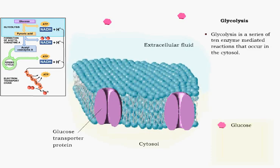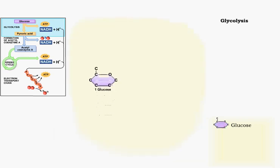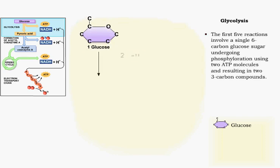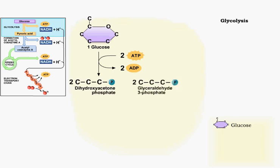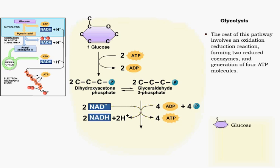Glycolysis is the first step of cell respiration. It occurs in the cytosol. In the first steps of this pathway, a single six-carbon molecule of glucose is phosphorylated using two ATP molecules and is broken into two phosphate molecules. An oxidation-reduction reaction then produces two reduced coenzymes and generates four ATP molecules from the smaller phosphate molecules.